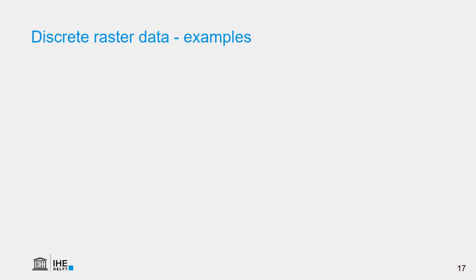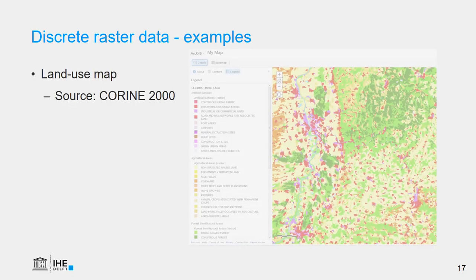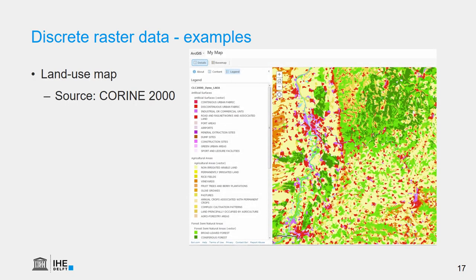For discrete raster data, we can think of land-use maps. Here we see the Corine land-use map from the European Commission, and each pixel has a discrete color which indicates to which land-use class it belongs.